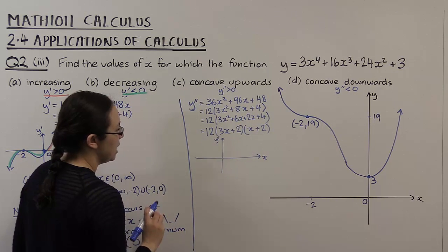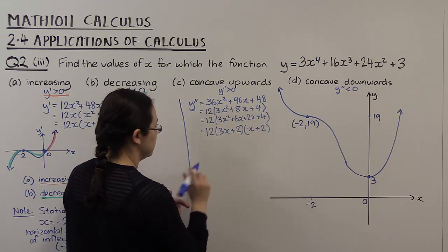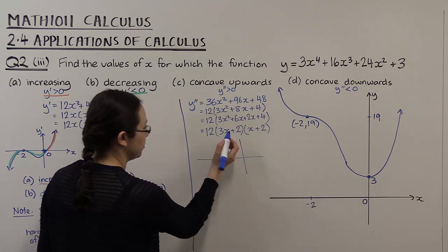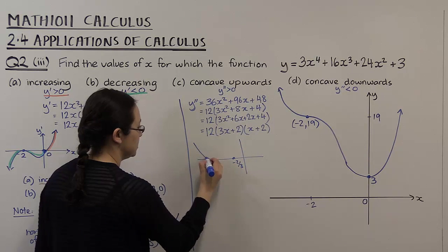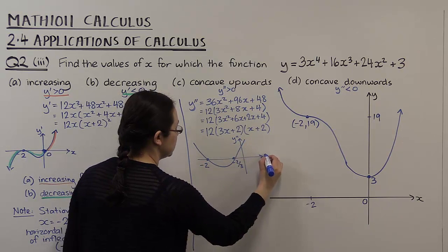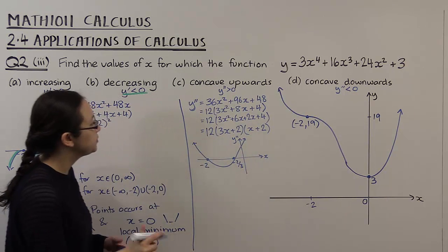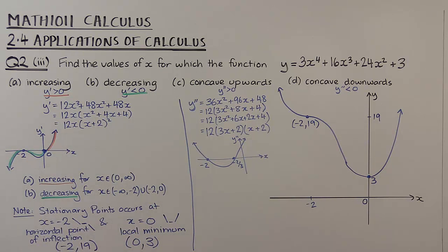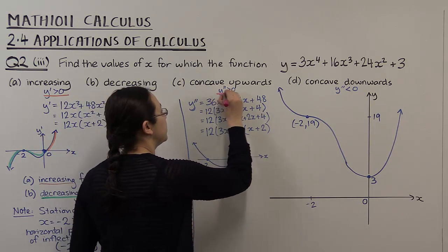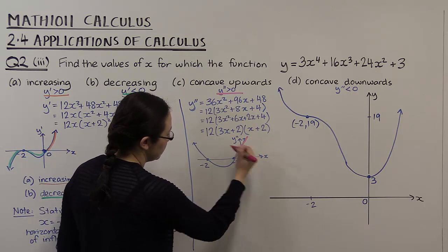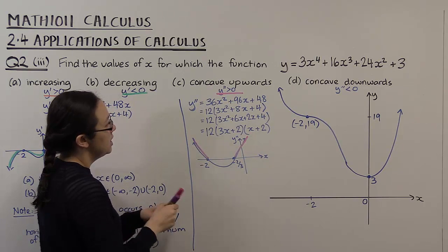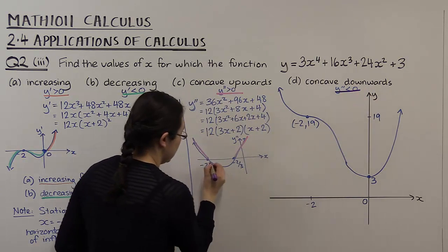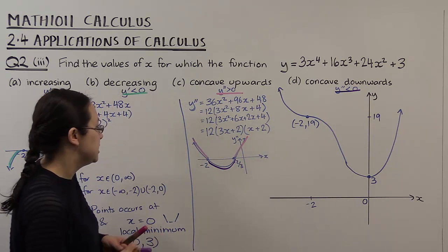That's just a parabola, and the x-intercepts are negative so I'll place them over here. We have x equals minus 2 and x equals minus 2/3 as the x-intercepts of this parabola — the graph of y'' against x. From the graph, y'' is greater than zero for x less than minus 2 and for x greater than minus 2/3, and y'' is less than zero between those values.